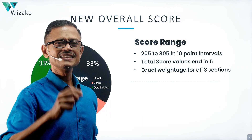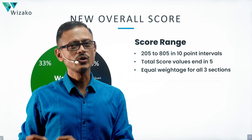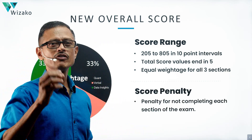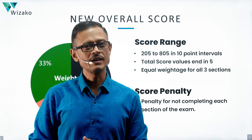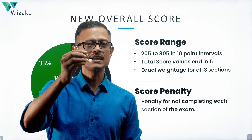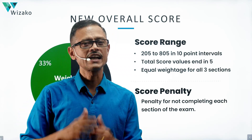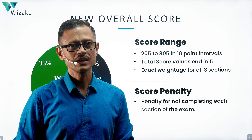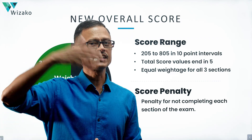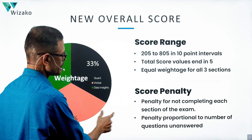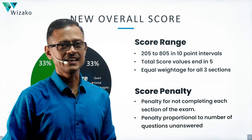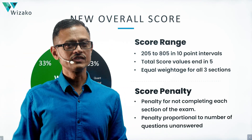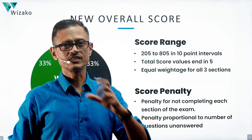A few more pointers. Things that existed in the old edition will continue in the Focus Edition. There's going to be a penalty for not completing the test. For instance, if out of 21 questions in the Quant section you only attempt 18 and run out of time, there will be a penalty for the three unanswered questions. The penalty is proportional to the number of questions unanswered, so it's in your interest to answer all questions in every section.